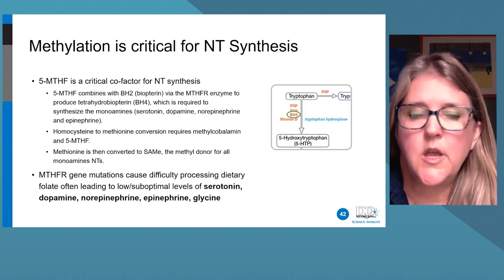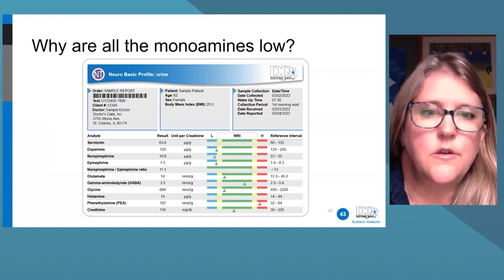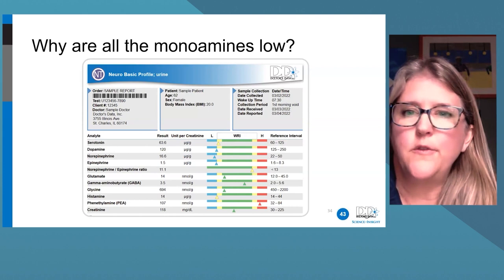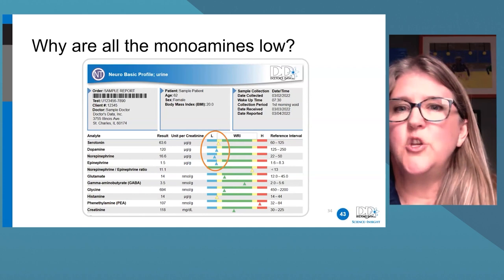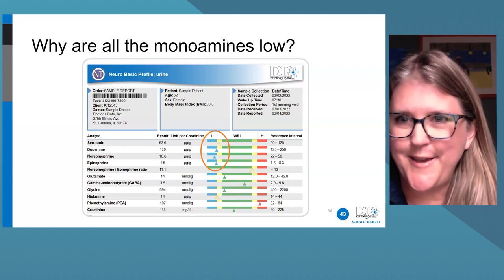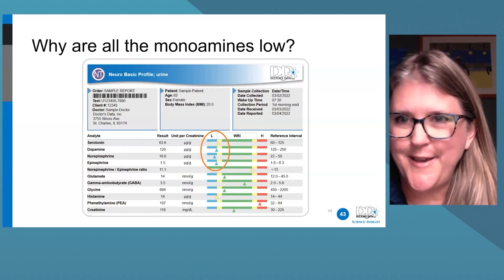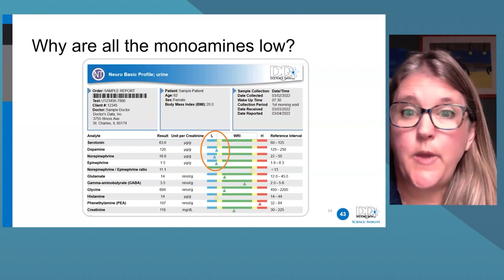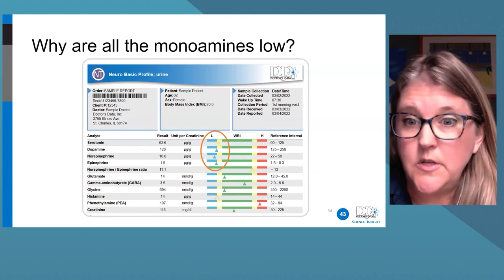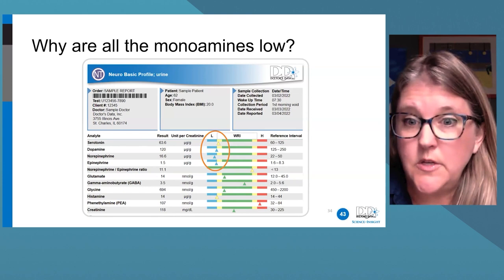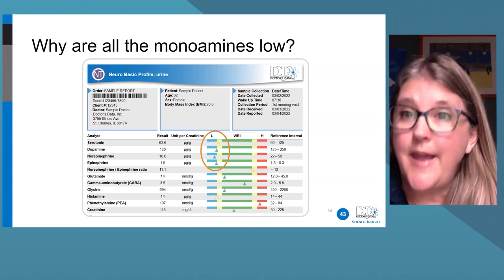Looking at the neurotransmitter portion of the neuroadrenal report where serotonin, dopamine, norepinephrine, and epinephrine are all low: what do we consider as etiologies? First is inflammation — can we identify a source? Second, are there MTHFR variants or methylation issues? Third, are there vitamin D or iron deficiencies? These are required for monoamine synthesis. You're already on your way to recognizing patterns and interpreting reports from a holistic root cause perspective.